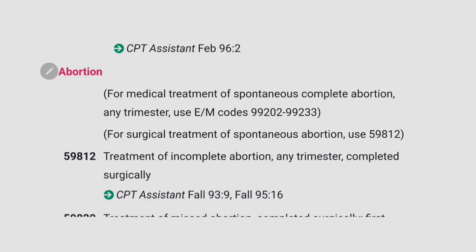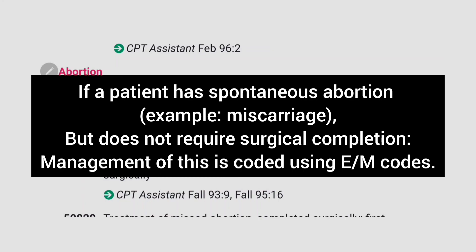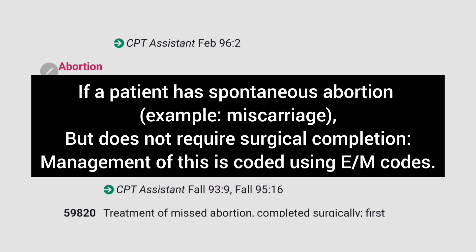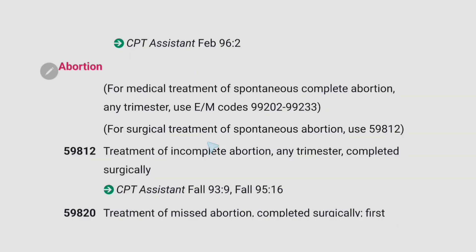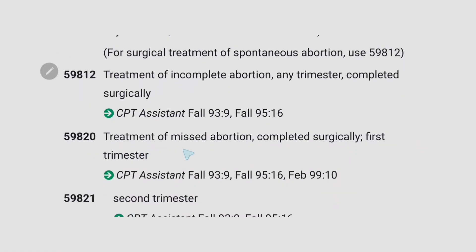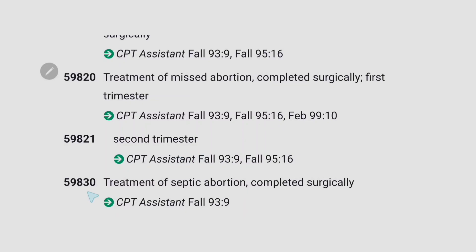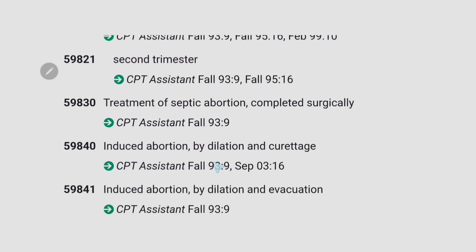The next important guideline is for abortion. Abortion codes are chosen based on the type of abortion involved — whether it is spontaneous, induced, or missed. If a patient has a spontaneous abortion such as a miscarriage but does not require surgical completion, management is coded using evaluation and management codes. For surgical treatment of spontaneous abortion, use code 59812. 59812 is for treatment of incomplete abortion, any trimester, completed surgically. 59820 is for treatment of missed abortion completed surgically, first trimester. 59821 is for second trimester. 59830 is for treatment of septic abortion completed surgically. 59840 is for induced abortion by dilation and curettage. 59841 is for induced abortion by dilation and evacuation.